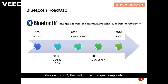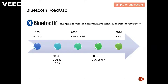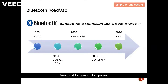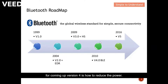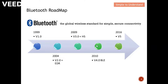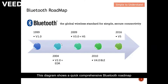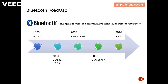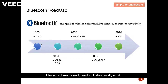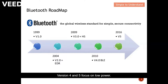Versions 4 and 5 represent a completely different design direction. Version 4 focused on low power — the data rate also increased, but the key criteria was how to reduce power consumption. Version 5 supports mesh networking. This diagram shows a comprehensive Bluetooth roadmap from version 1 to version 5: versions 2 and 3 focused on increasing data rate, while versions 4 and 5 focused on low power.